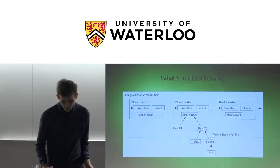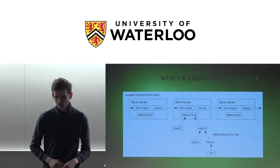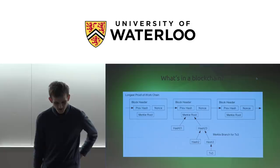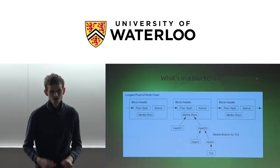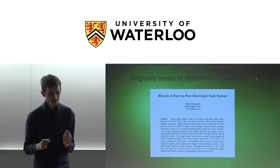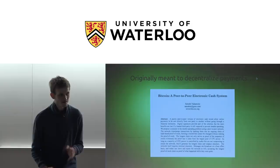So first of all, what's in a blockchain? A blockchain is a chain of blocks. Basically it's a data structure that keeps track of a history of things of some kind that people want to collectively keep track of. The originally motivating use case for blockchains was Bitcoin, this peer-to-peer digital currency that was launched at the beginning of 2009.